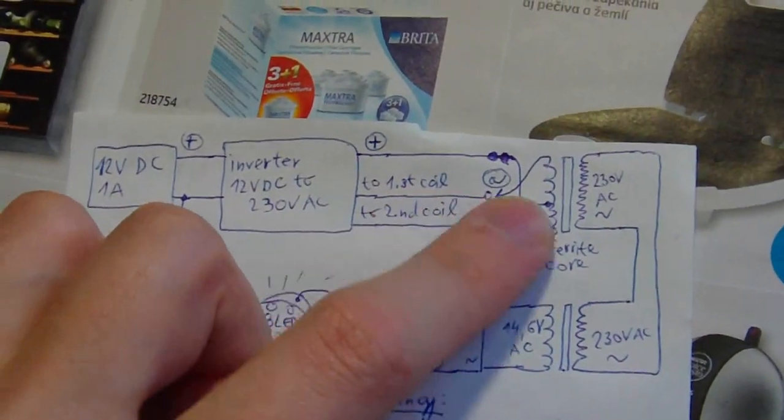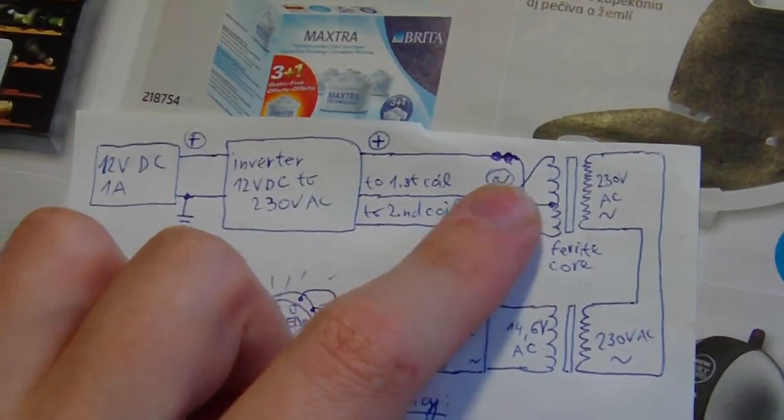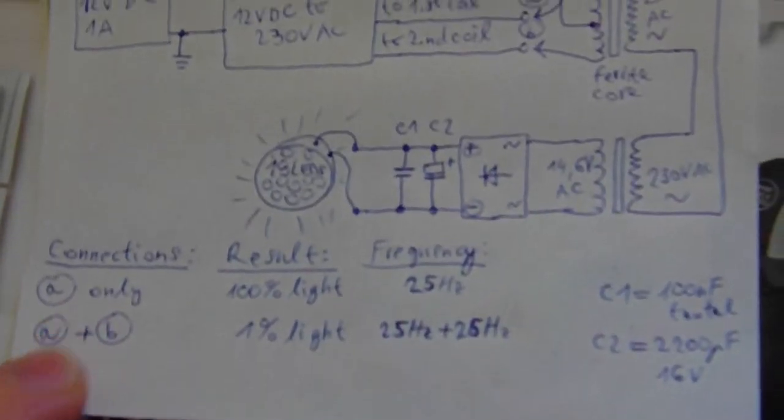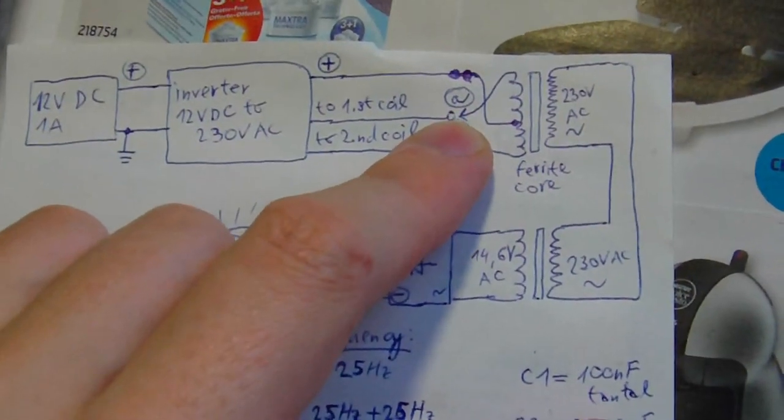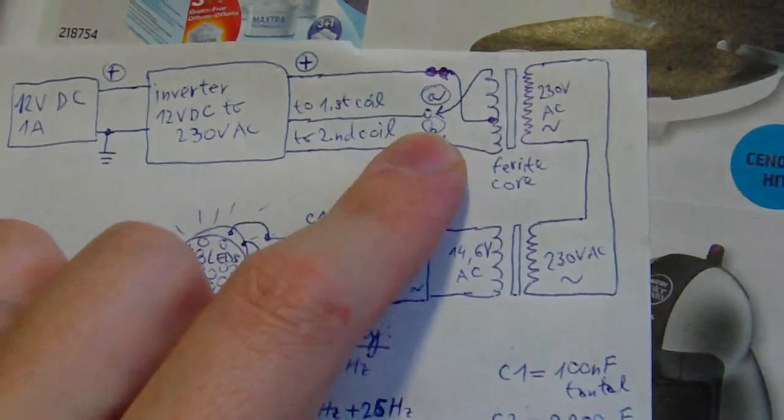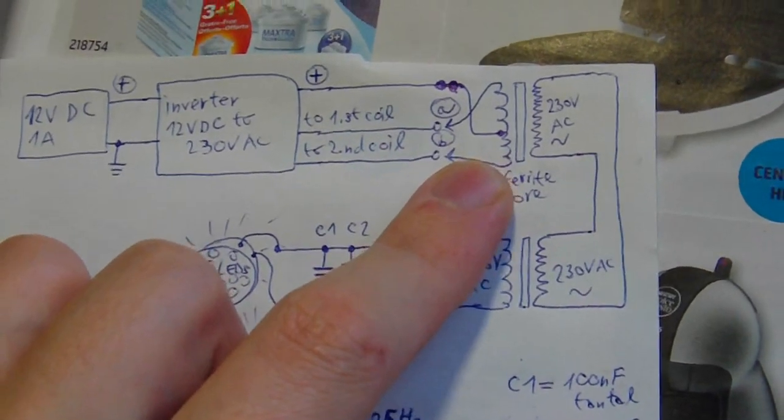This is output to the first coil, this is output to the second coil. First connection, this connection we make with A only. A and positive. B are plug out.